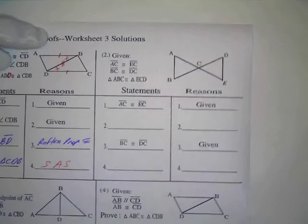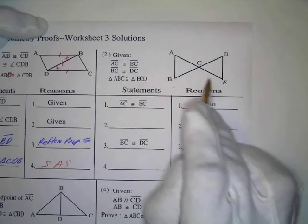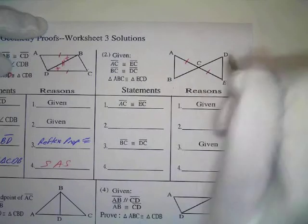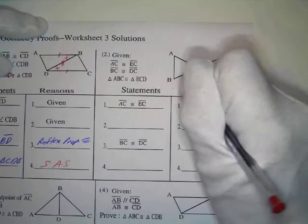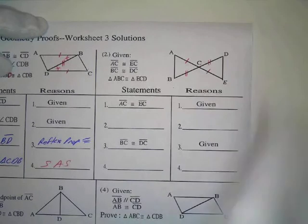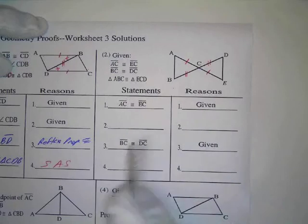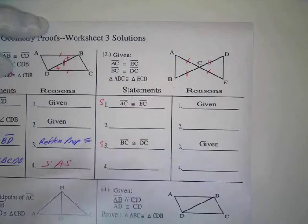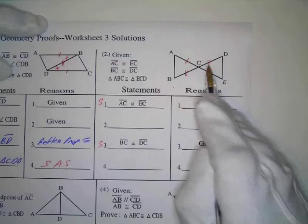I copied these right off the worksheet. We have AC is congruent to EC, so I can mark that. BC is congruent to DC. This is what I stated in the givens. I wrote these given here first because these are sides.